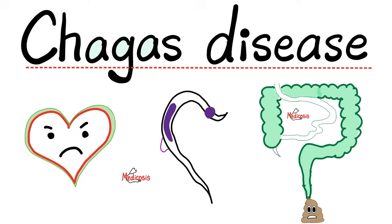We talked about the types of shock, such as cardiogenic shock, hypovolemic shock, obstructive shock, septic shock, neurogenic shock, and anaphylactic shock. We talked about rheumatic fever and infective endocarditis, cyanotic and acyanotic congenital heart diseases, acute fibrinous pericarditis and constrictive pericarditis, dilated cardiomyopathy, hypertrophic cardiomyopathy, and restrictive cardiomyopathy, myocarditis and broken heart syndrome. We also talked about cardiac arrhythmias and valvular heart diseases.